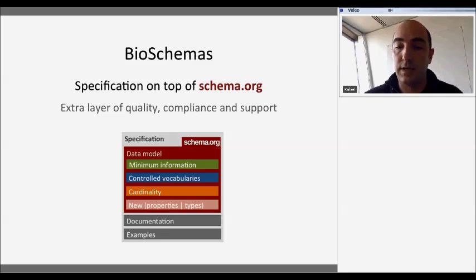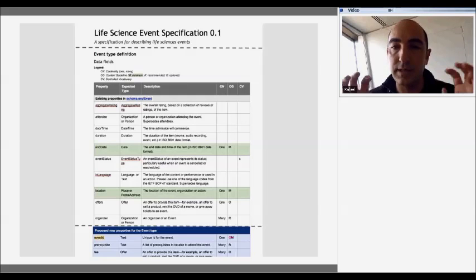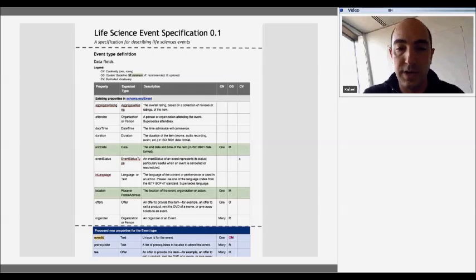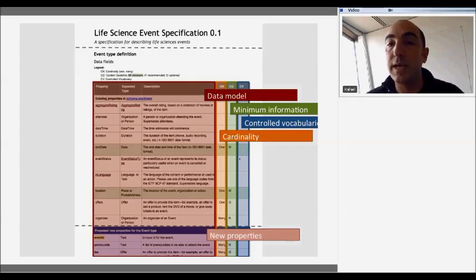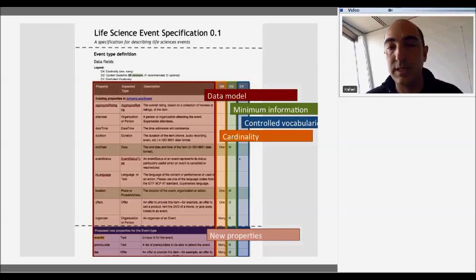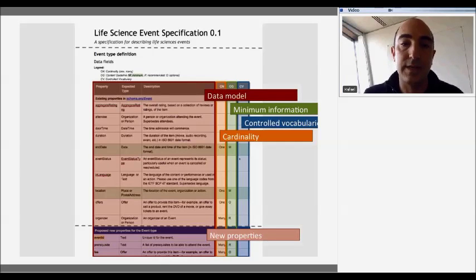I'll show you a little bit more about this in the coming slides. This is a presentation of our specification — I've cut and pasted bits of it. You have the title there, a screenshot of the data model, and below a screenshot of new properties. On top I've added a layer to show what we are doing. You can see in red the data model, which is actually derived from Schema.org. On the left are the different properties used to define one specific type — in this case, a life science event.